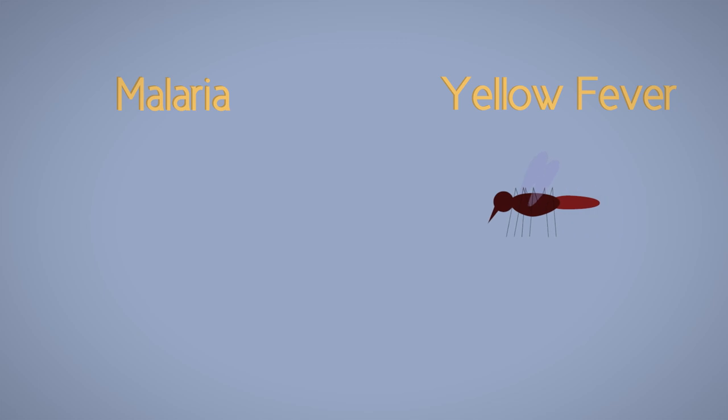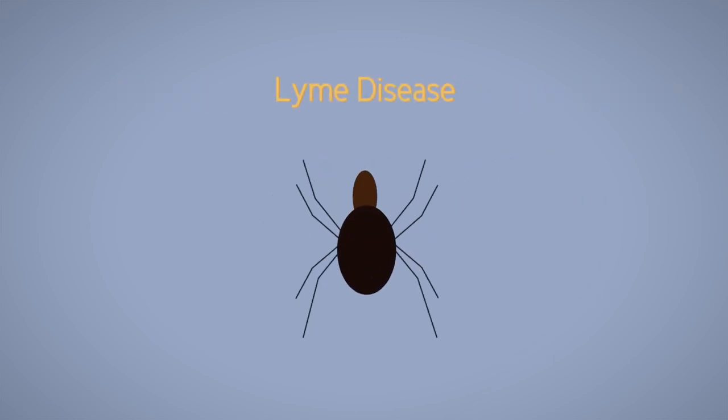Malaria and yellow fever both have mosquitoes as a vector, and Lyme disease uses ticks. A vector is an organism that has an active role in transmitting pathogens from one host to another.